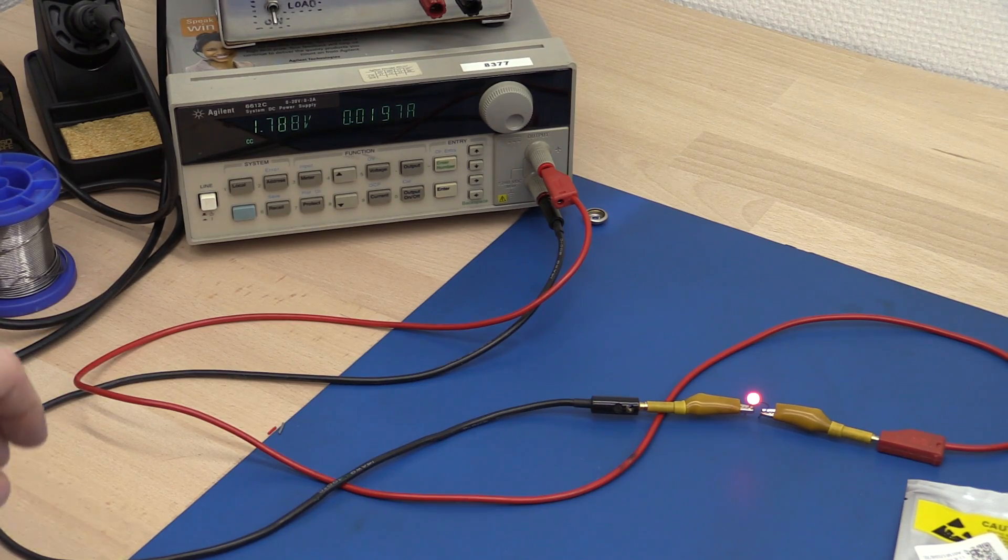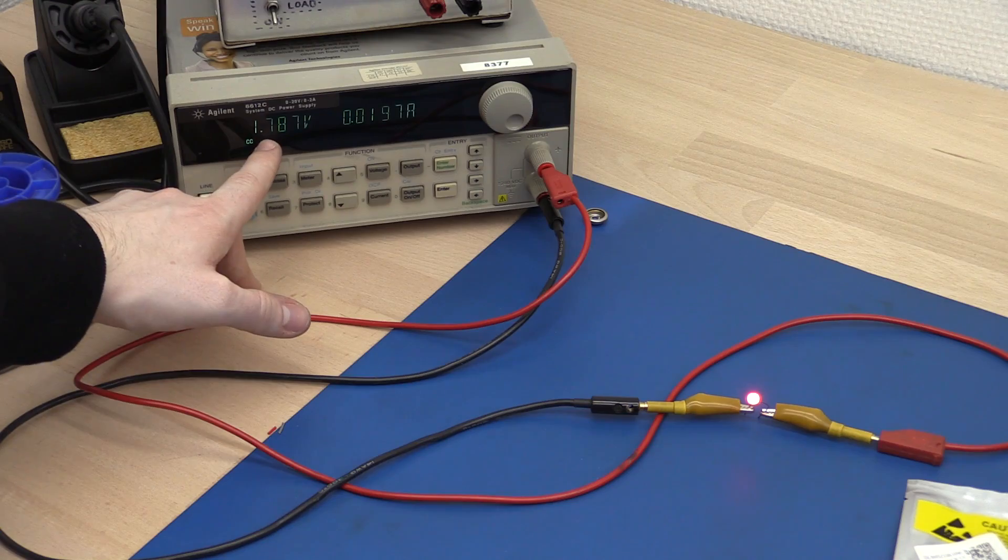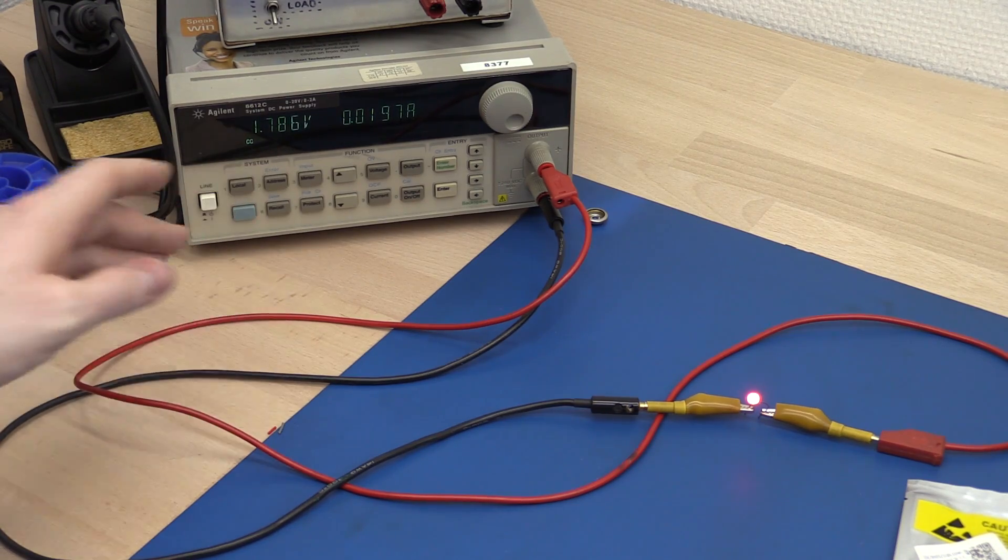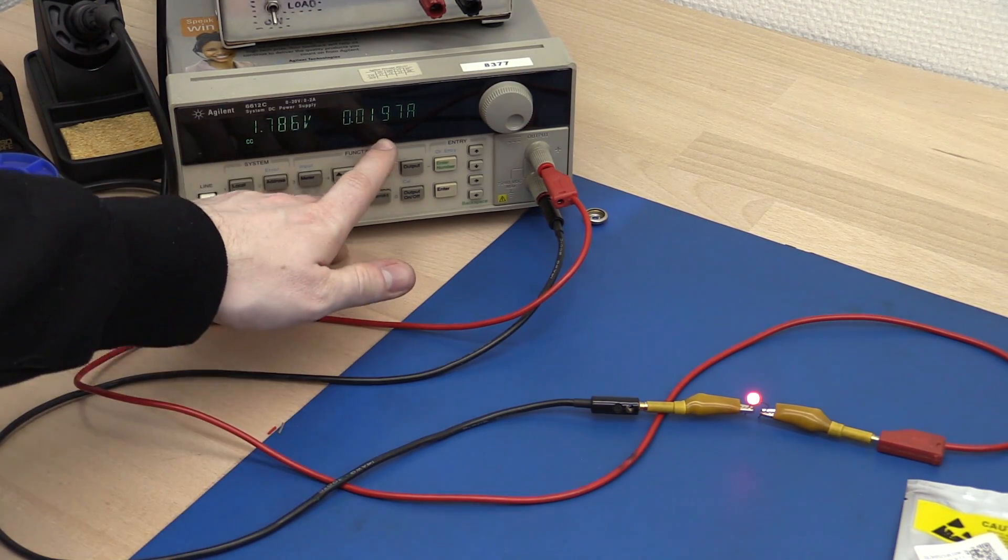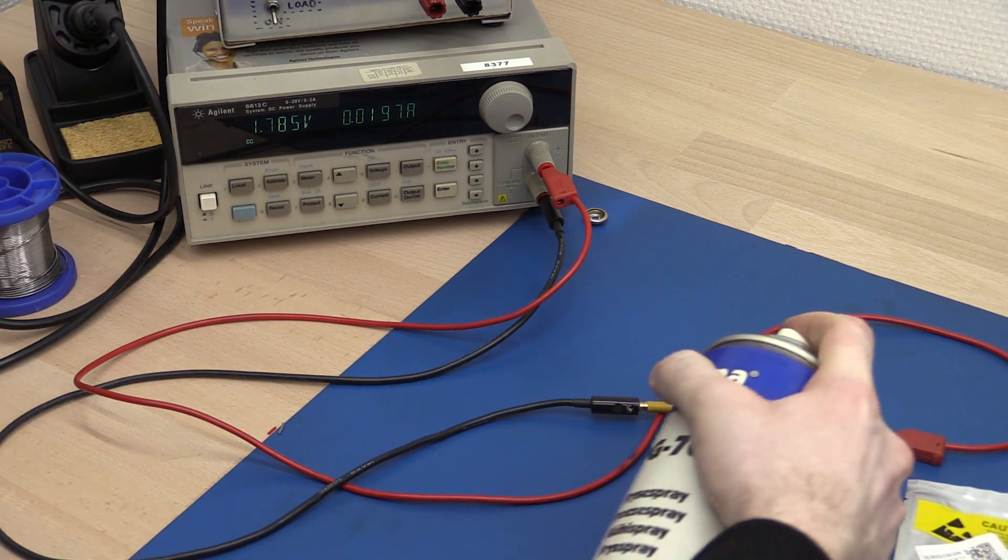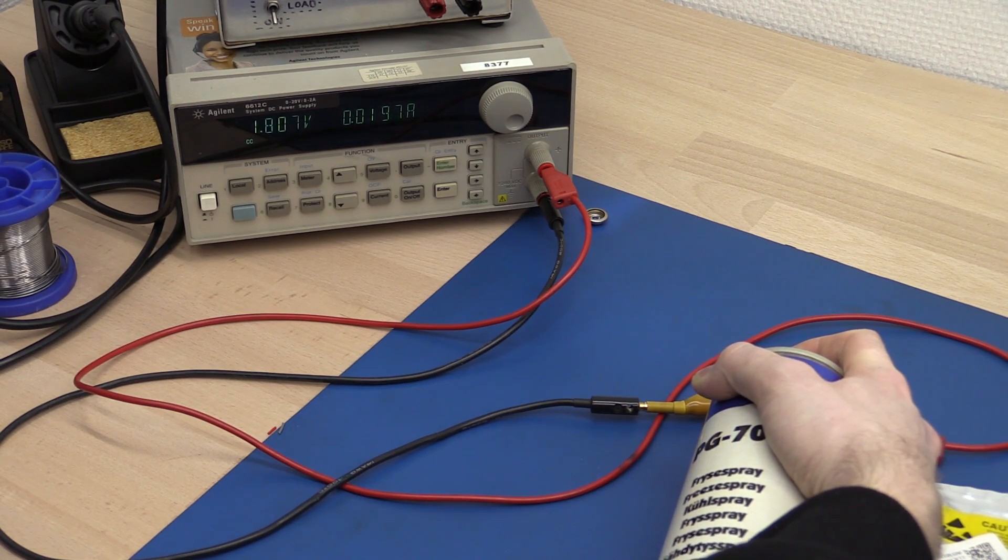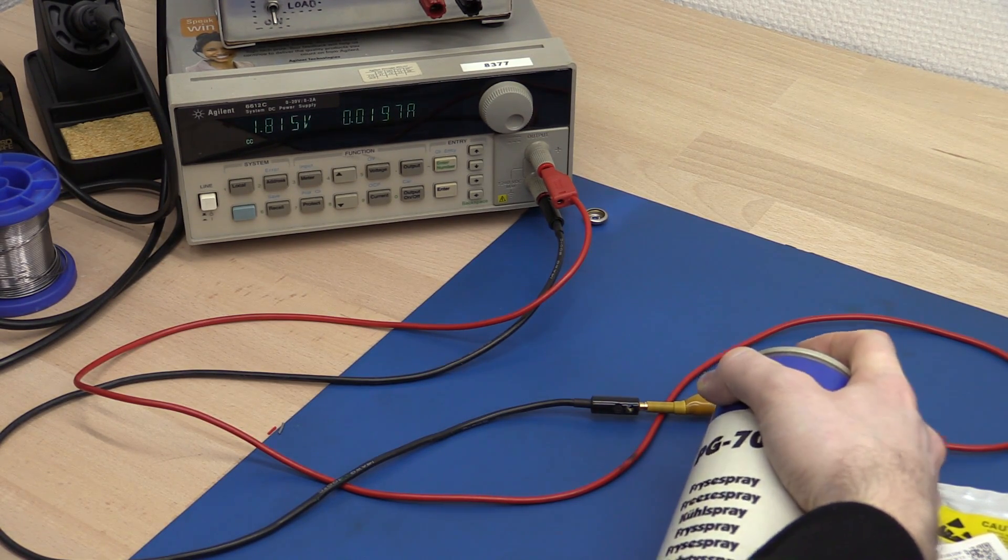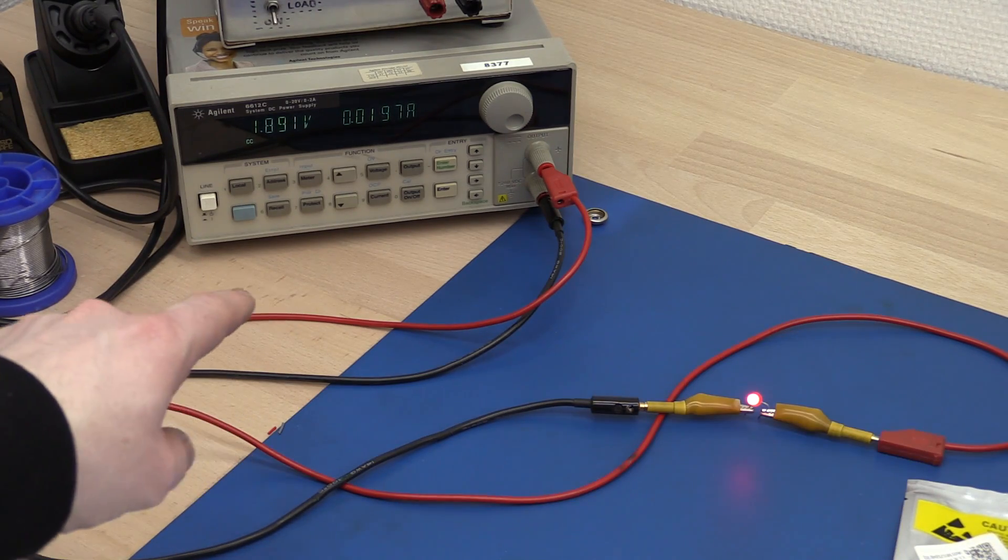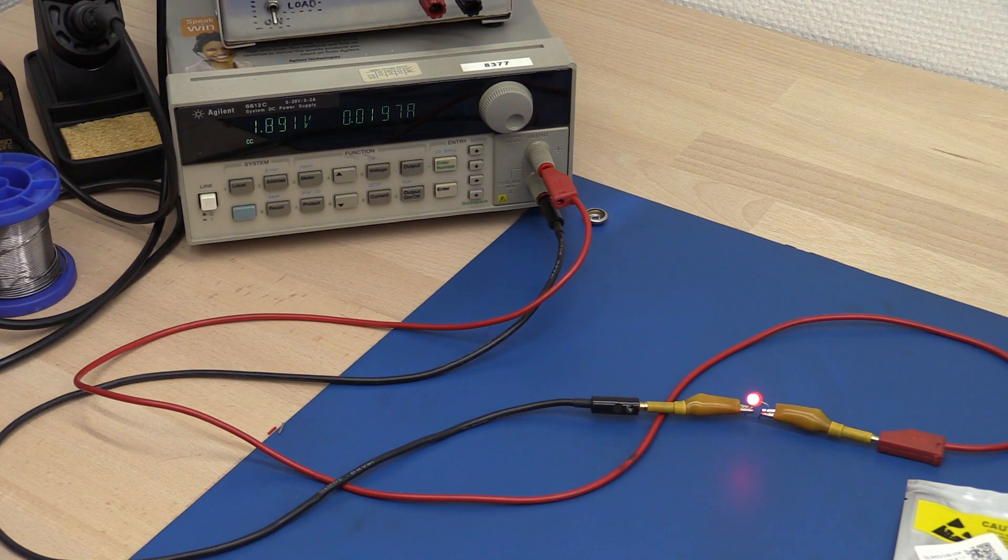So as you see here is a fresh LED. At 20 milliamps we have a forward voltage of around 1.8 volts. I'm running a constant current of 20 milliamps and now let's see what happens when we cool it down.